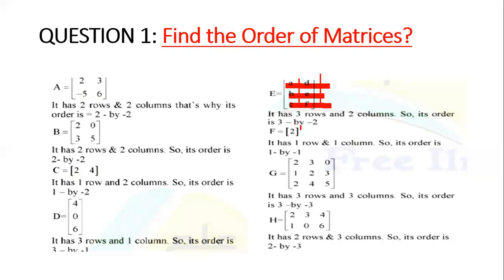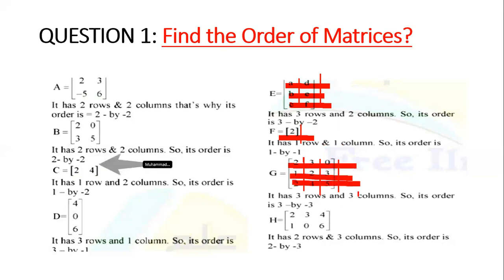In this case, I have 1 row and 1 column, so the order is 1×1. In the next case, I have columns 1, 2, 3 and rows 1, 2, 3. The order is 3×3.